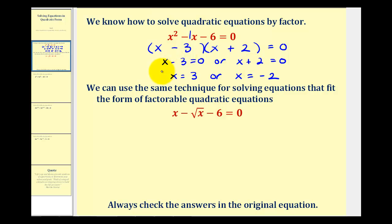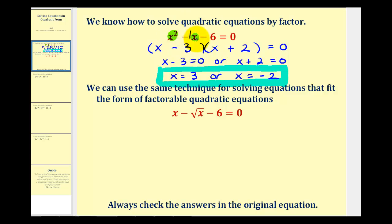Now we want to apply the same technique to equations that are not quadratics, as long as they fit the form of a factorable quadratic. The form we look for is whether the square of the variable factor of the middle term — in this case x — equals the variable factor of the first term, in this case x squared. So if we square the variable factor, it should equal the variable factor of the first term.